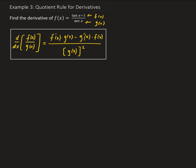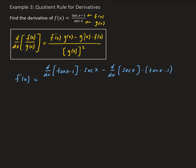So let's go ahead and apply the quotient rule. We're going to have f prime of x equals the derivative of the numerator — tangent x minus 1 — times the denominator, minus the derivative of the denominator (secant x) times the numerator (tangent x minus 1), all divided by the denominator squared, which is secant squared x.